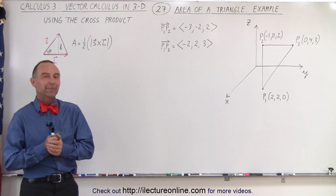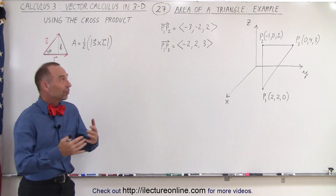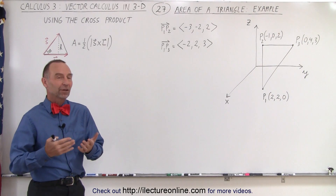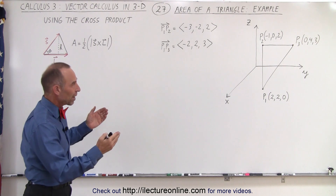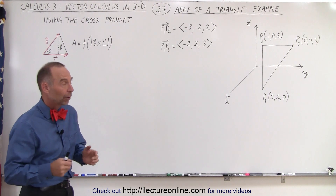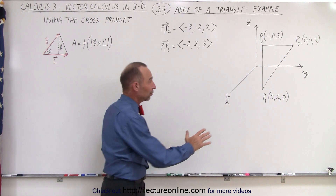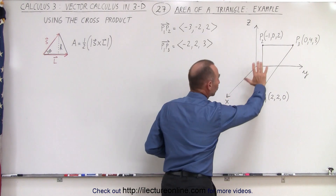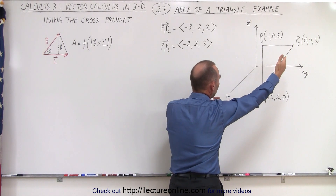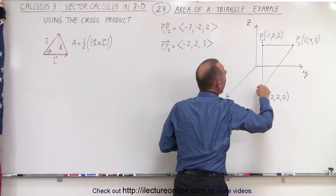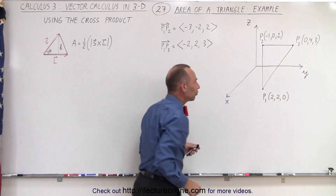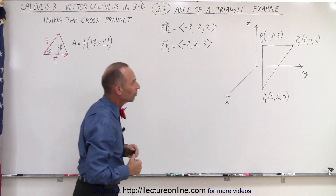Welcome to our lecture online. Here we're going to see an example of how to find the area of a triangle in three-dimensional space. What we have here is a triangle that is dangling somewhere in three-dimensional space with the three corners defined by those constants.